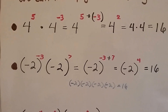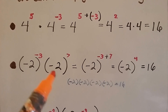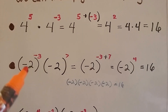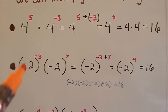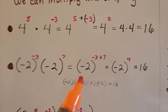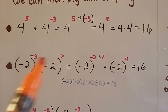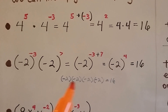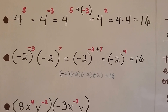If we have negative two in parentheses to the negative third power times negative two in parentheses to the seventh, the negative two is the base — it's not the same as a negative on the outside of the parentheses. So we have negative two to the negative three plus seven, which gives us negative two to the fourth. That's negative two times itself four times, which gives us a positive 16.